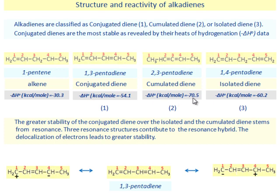The greater stability of the conjugated diene over the isolated diene and accumulated diene system stems from resonance. Three resonance structures contribute to the resonance hybrid. The delocalization of electrons leads to greater stability.